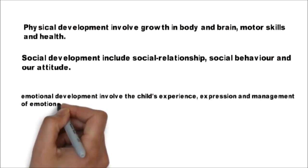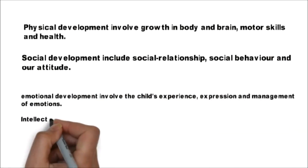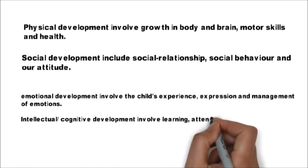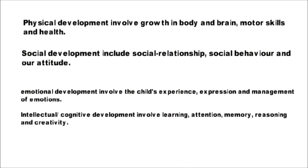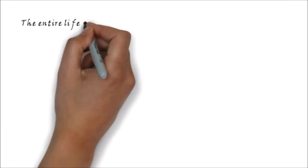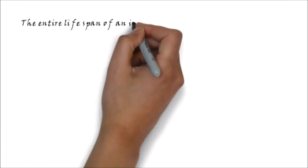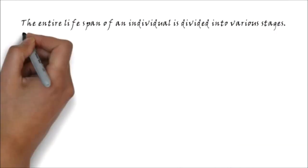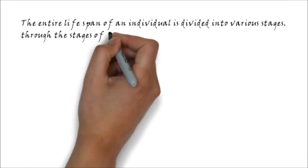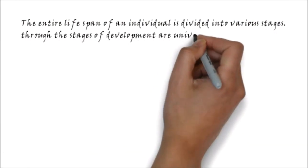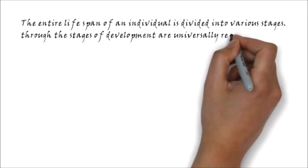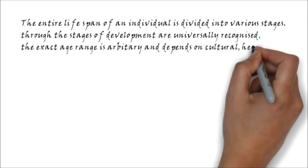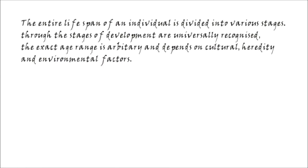Intellectual or cognitive development involves learning, attention, memory, reasoning, and creativity. The entire lifespan of an individual is divided into various stages. Though the stages of development are universally recognized, the exact age range is arbitrary and depends on cultural, hereditary, and environmental factors.